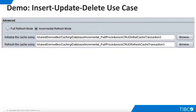Just as before, we have set up single-table caching but have not loaded any data. Go to the Advanced panel on the view's Caching tab. Change the refresh mode from Full to Incremental, and browse to select the initialize and refresh scripts. Save your work, refresh the cache, and the initialize script will execute. Let's examine this script.